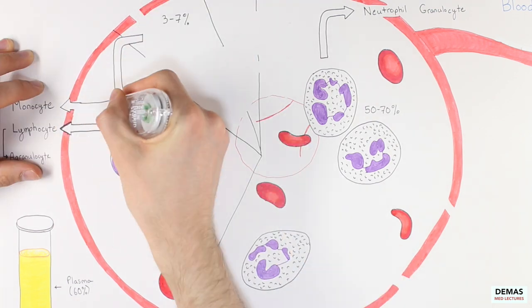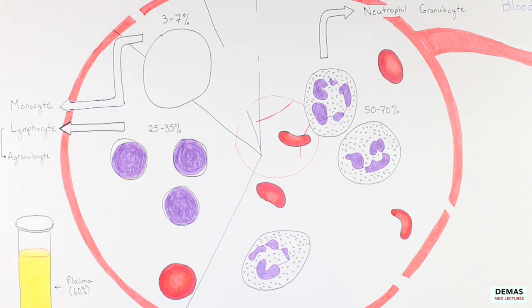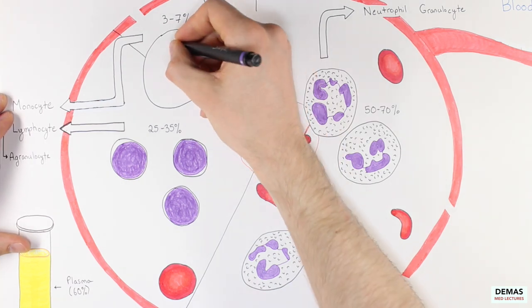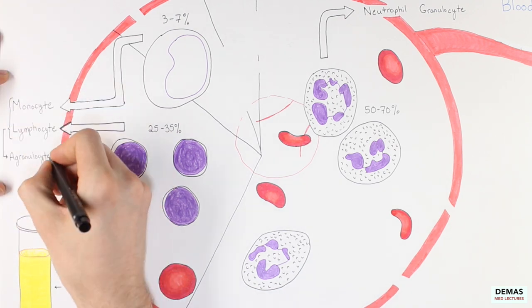The key features of the monocytes is their size as they are the largest cell within the blood. Monocytes also contain a rather large nucleus that typically is kidney-shaped and off-center as shown here. They are also agranulocytes.